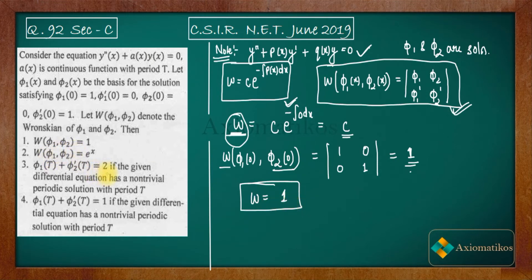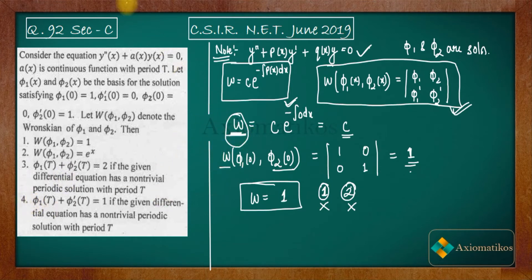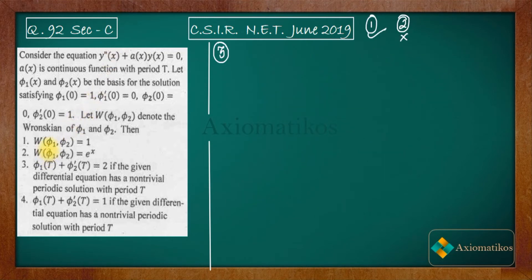So W(φ₁, φ₂) = 1 for every x. This means the first option is true and the second is false. Now let us look at the third and fourth options, which state that φ₁(t) + φ₂'(t) = 2, where t is the given period.